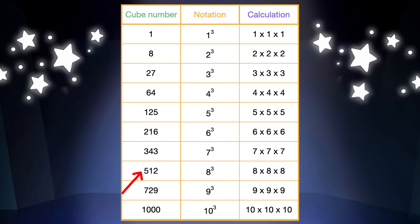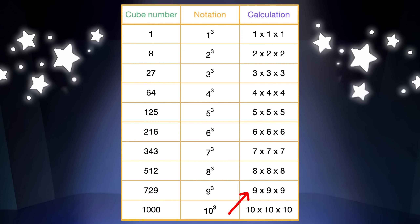Five hundred and twelve. It's eight cube, or eight times eight times eight. Seven hundred and twenty-nine. It's nine cube, nine times nine times nine. And lastly, one thousand. It is ten cube, or ten times ten times ten.